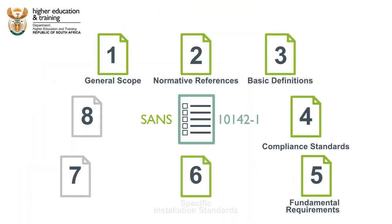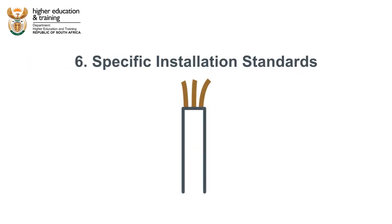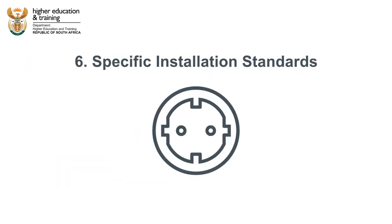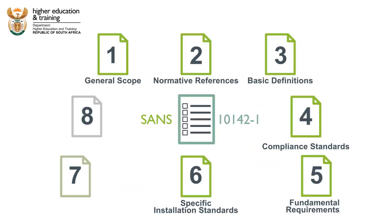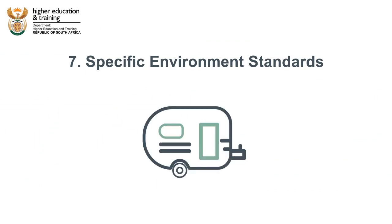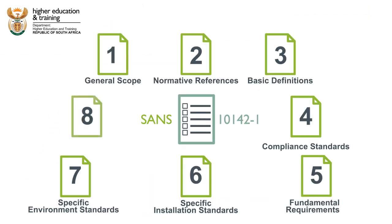Clause 6 gives specific standards for different types of installations like conductors and cables, wireways, circuit breakers, socket outlets and fixed appliances like stoves and geysers. Clause 7 provides regulations for installations in specific types of environments like bathrooms, swimming pools, caravan parks and hospitals. Clause 8 specifies how installations need to be tested and certified.